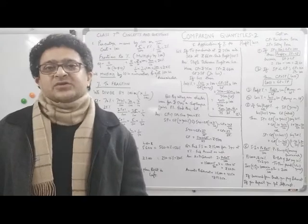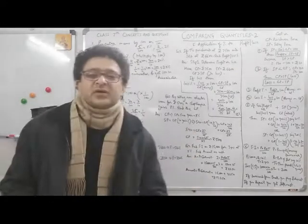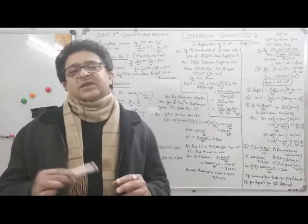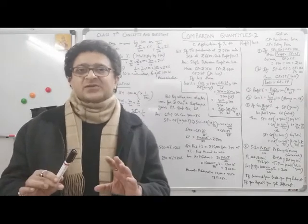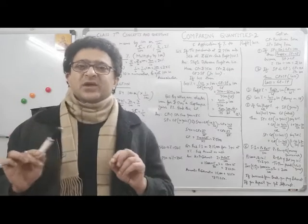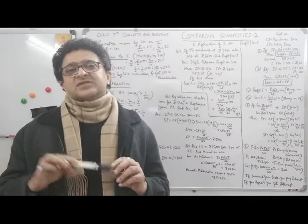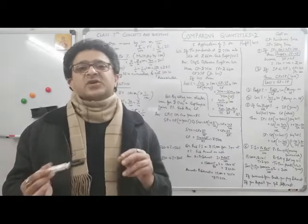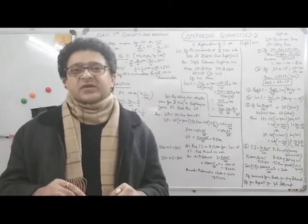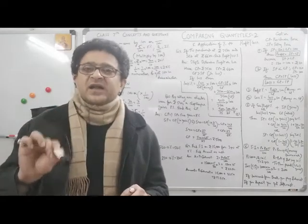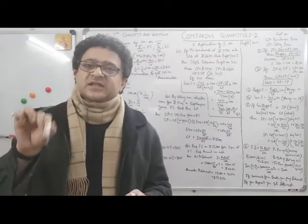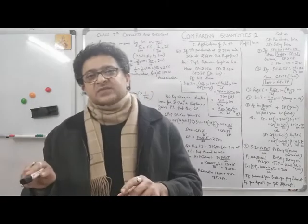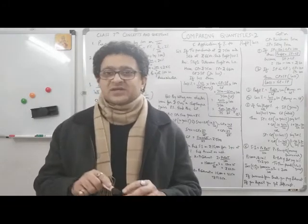So 12% is the loss. Remember: it will always be SP − CP or CP − SP, and in a loss scenario CP is higher so CP comes first. In profit, SP is higher so SP comes first. Always put the higher number first. The denominator for both profit percent and loss percent is always CP.